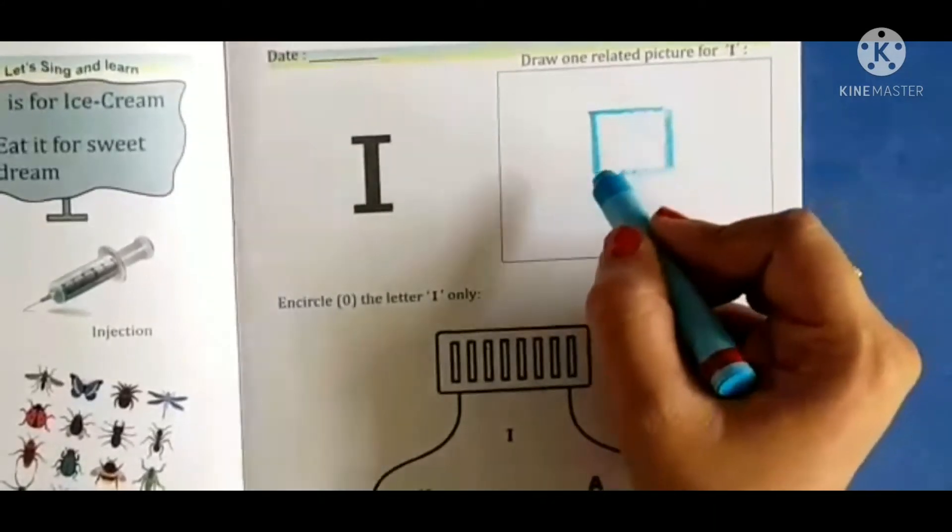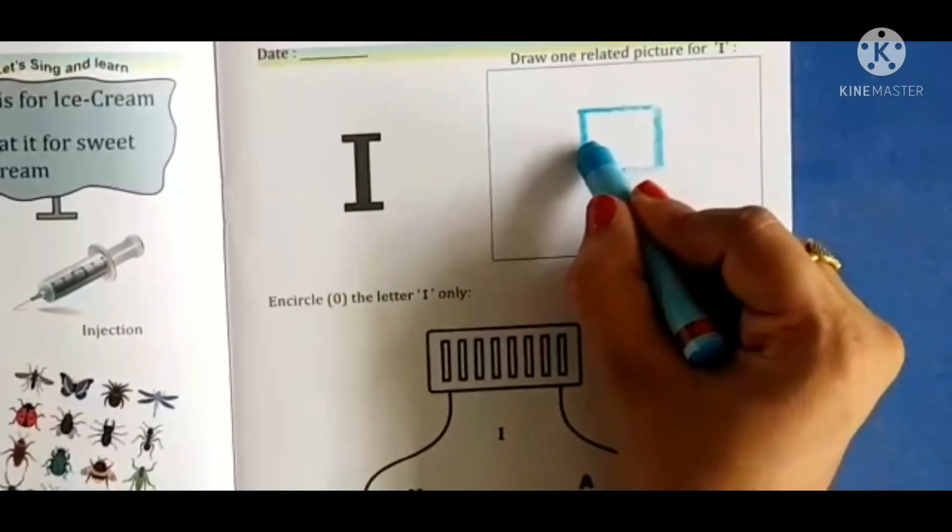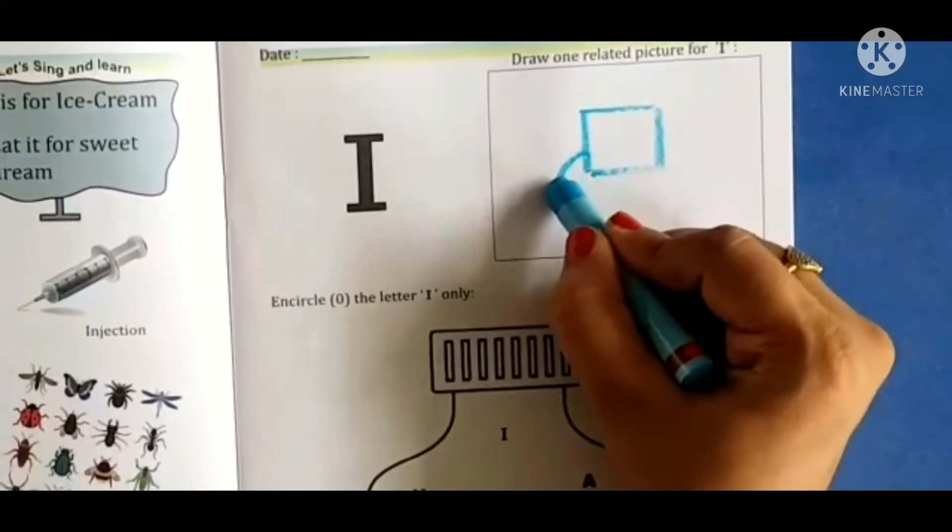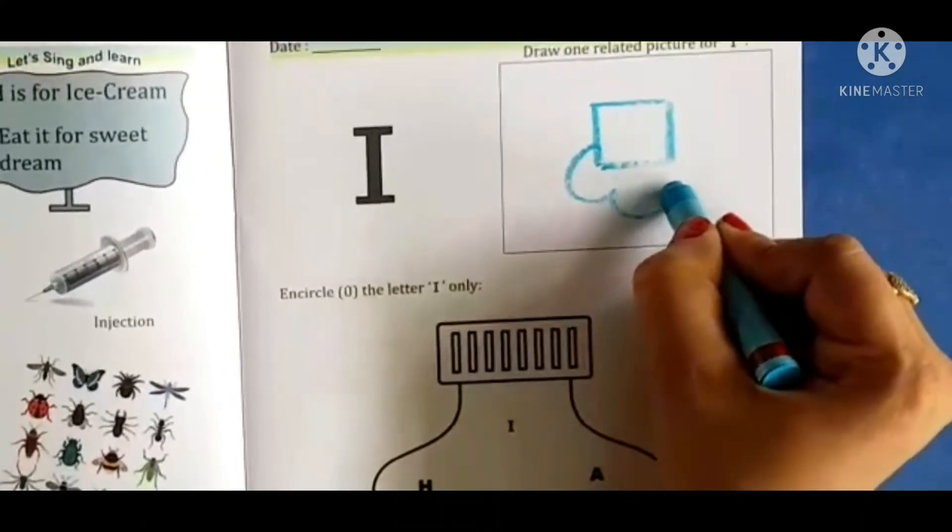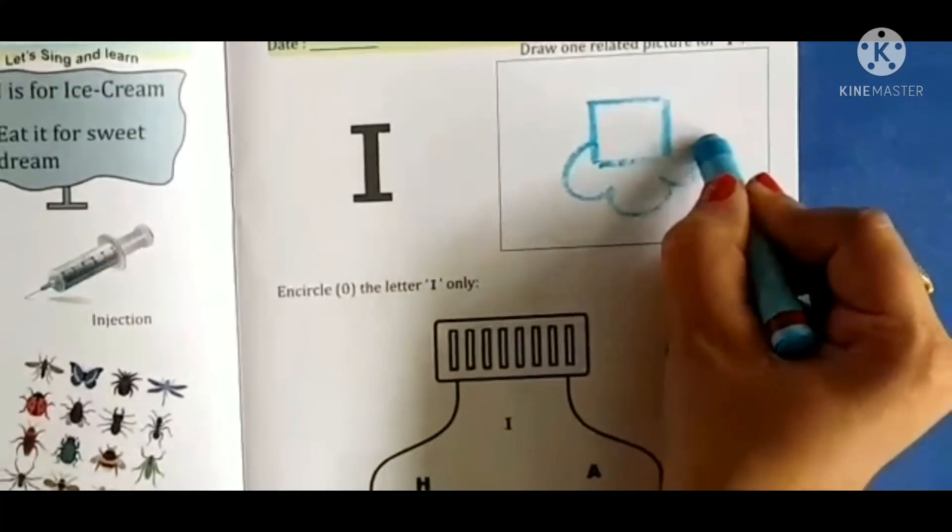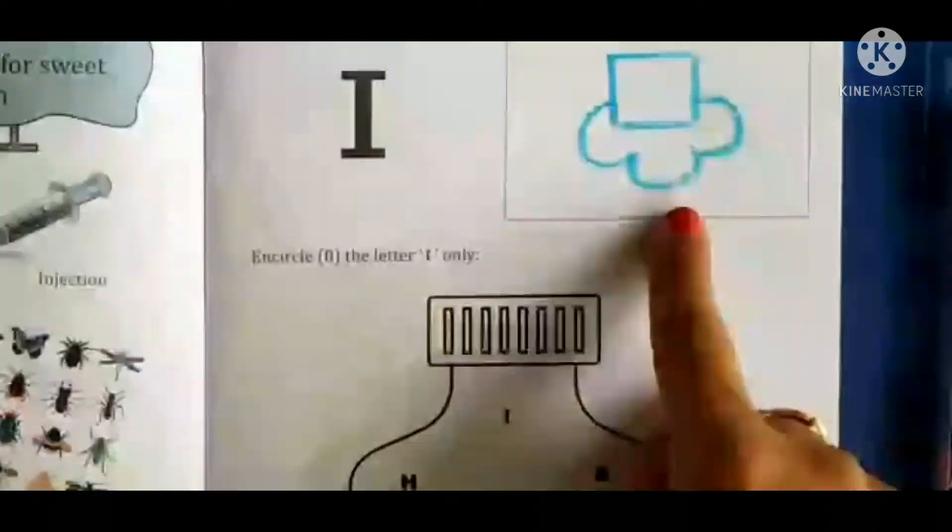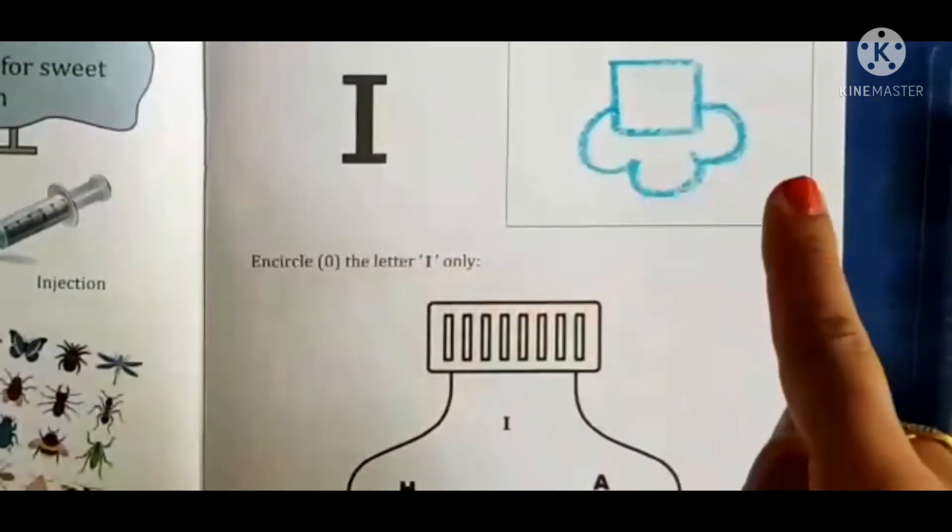And then we will draw sleeping line. Ye hamara square ice cube ban gaya hai. Aur neeche hum kya karenge, we will make one curve, we will make one another curve and then we will join with this line. This is ice cube. I for ice cube.